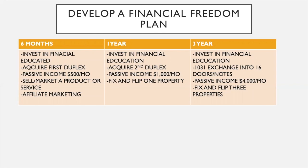Looking at year one, you continue to invest in your financial education and now you acquire a second duplex, creating more passive income. You also take on a fix-and-flip venture, maybe with a partner, for this first property.